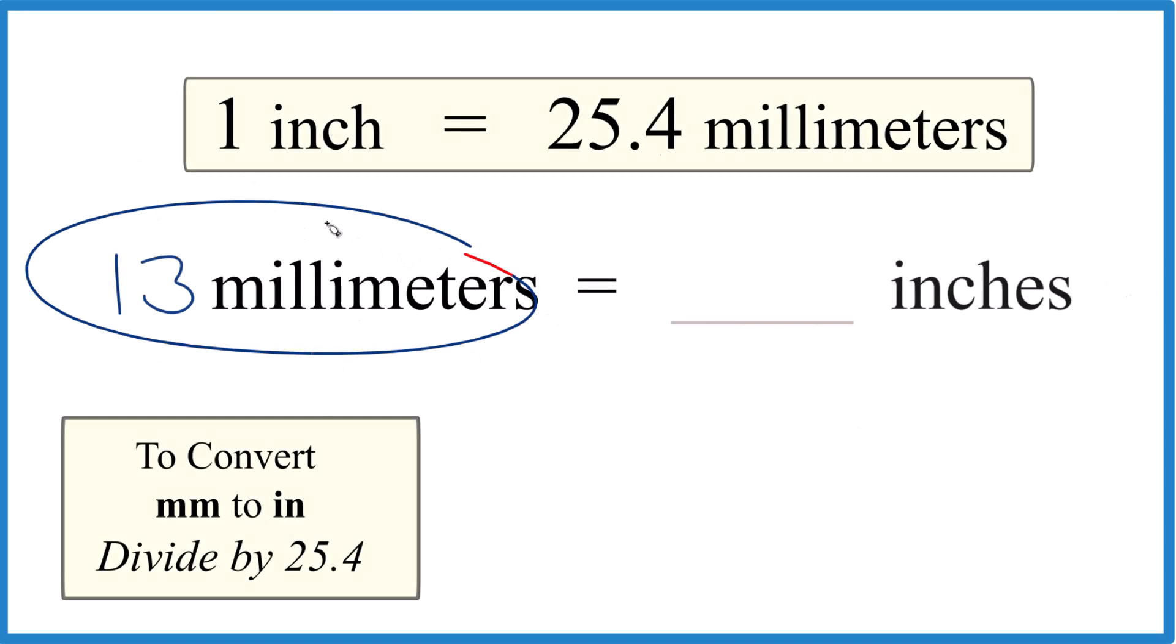If you have 13 millimeters and want to convert it to inches, here's how you do it. When you go from millimeters to inches, all you need to do is divide by 25.4, because one inch is made up of 25.4 millimeters. So that's the conversion factor. We'll take our 13 millimeters